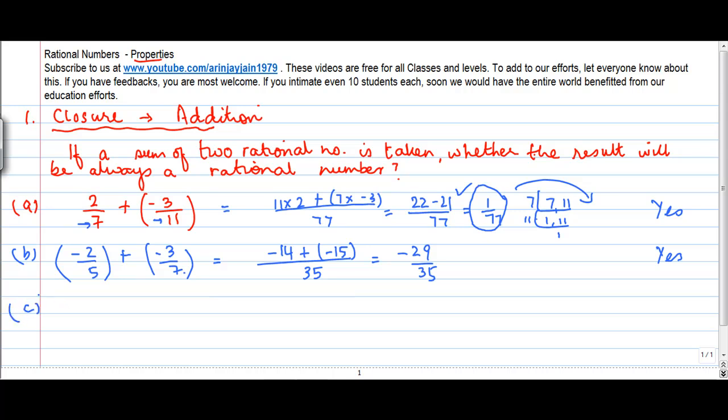Let me give a third shot. Let me take 3 by 8 plus 4 by 8. So I get 8 as the LCM or the least common multiple. This will be 3 plus 4.